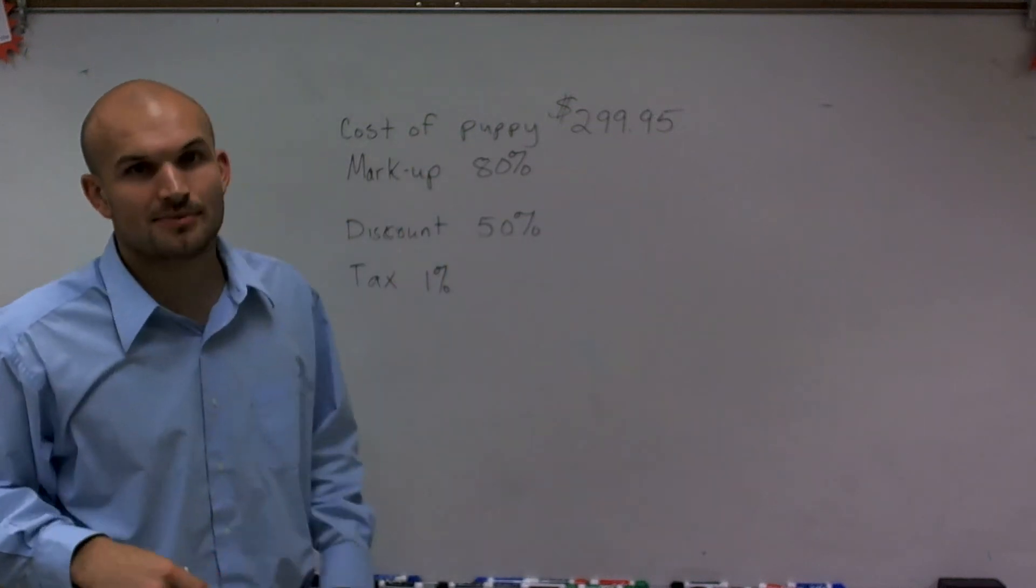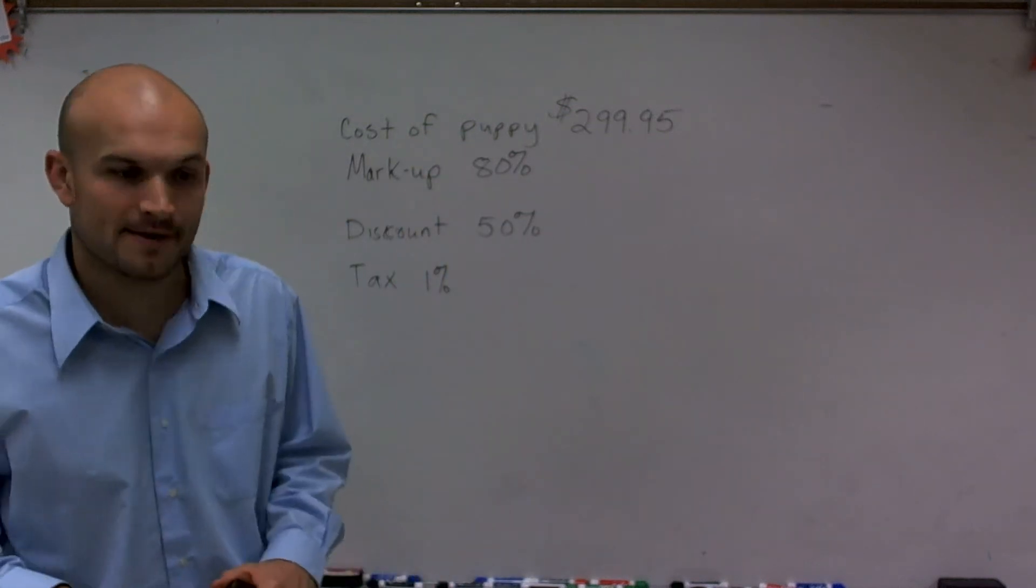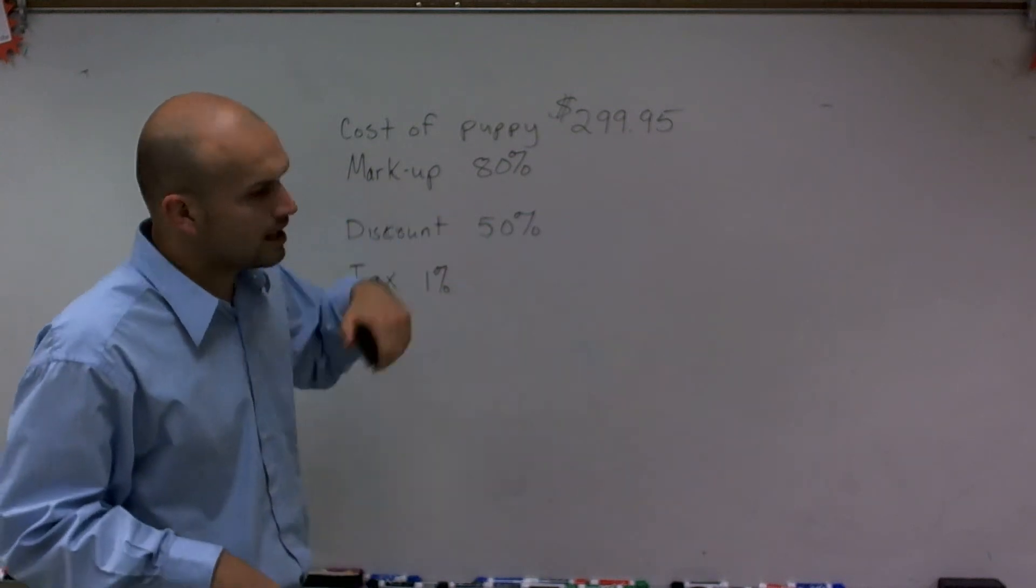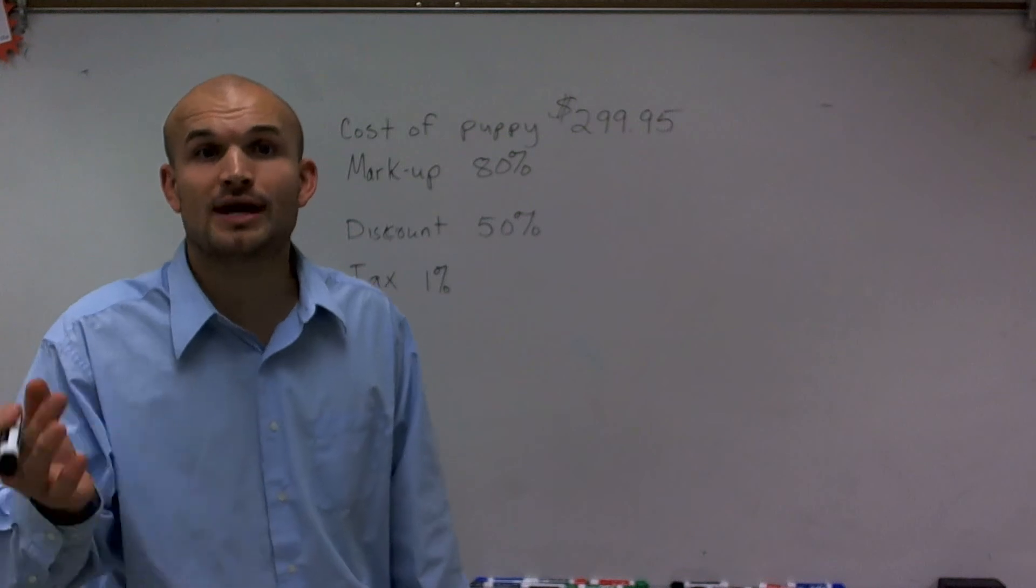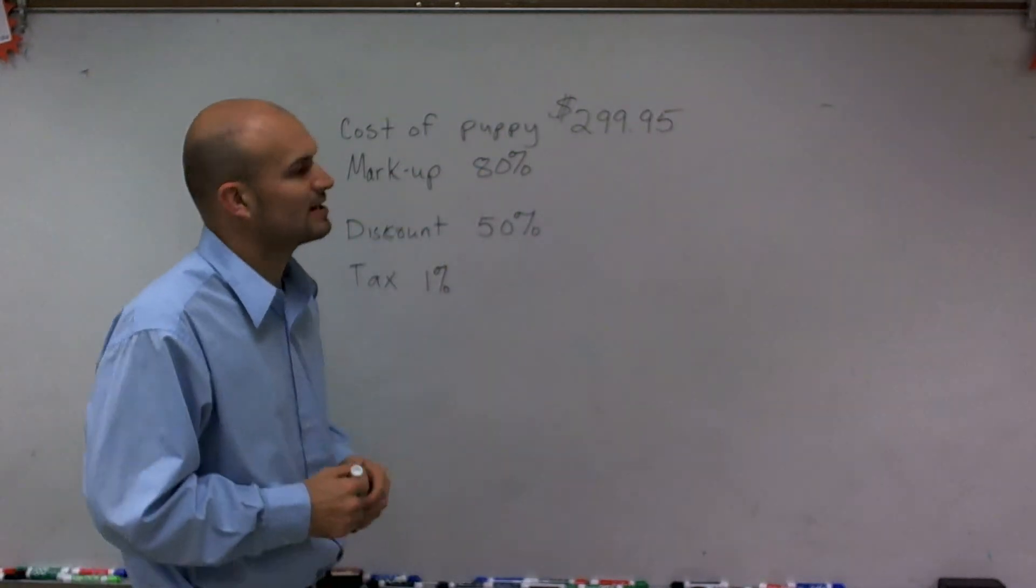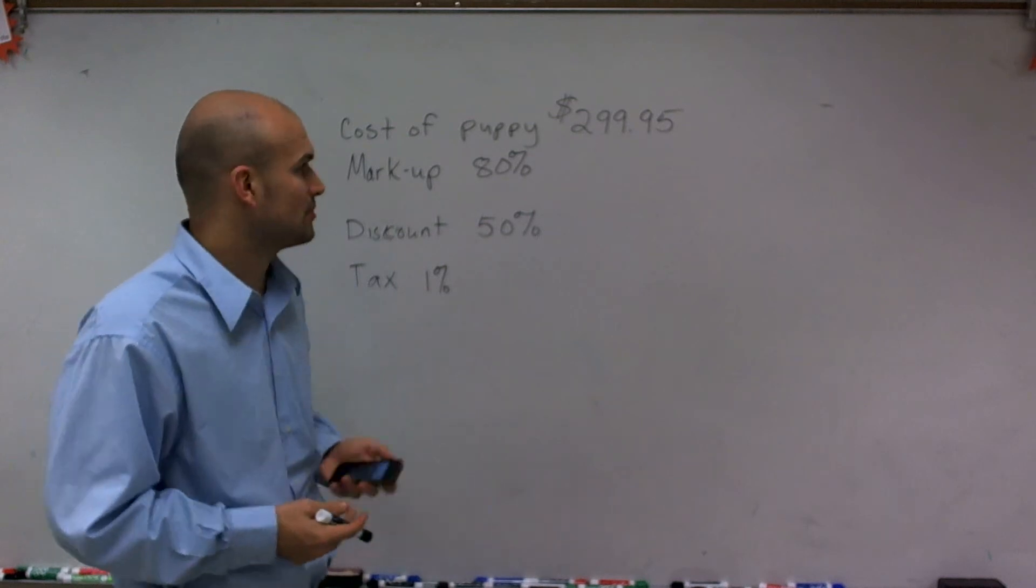Let's say the original cost of the puppy is $299.95, right? But let's say as the puppy gets a little bit older, they mark it up 80%, like per month it goes up. So let's say we're going to have an 80% increase in the puppy's price. We're going to mark it up.